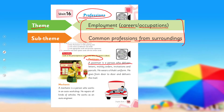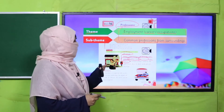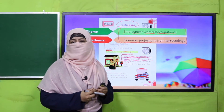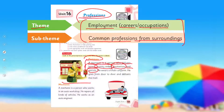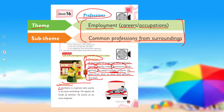A postman is a person who delivers letters, money orders, invitations, and parcels. This is the work of a daakya. Nowadays, courier is also included. The postman and courier man — their duty is to take parcels, money orders, and letters from one place to another. The typical postman's uniform is khaki-colored. He goes from door to door and delivers the mail.